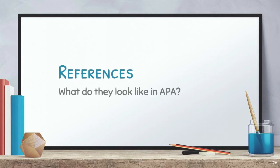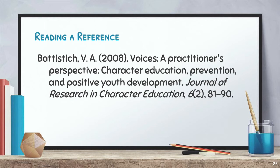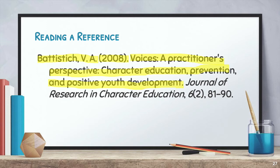What do the references in your references list look like in APA? Let's look again at this citation we found earlier in that article about character education. Who wrote this? When was it published? What is it called? And where can I find it? This was written by V. A. Batistich. It was published in 2008. The article title is 'Voices, A Practitioner's Perspective, Character Education, Prevention, and Positive Youth Development.' And it's published in the Journal of Research in Character Education, Volume 6, Issue 2, pages 81 to 90.